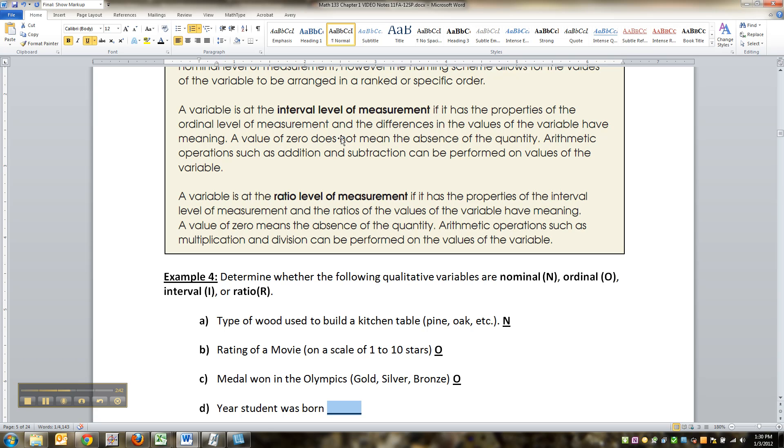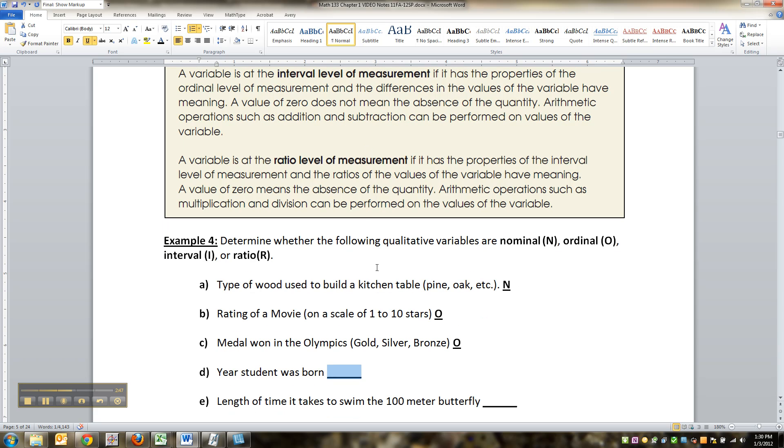So what was year zero? There was no year zero. That's why it's interval. When there's no meaningful zero, that's the interval level of measurement.